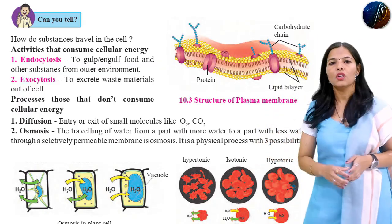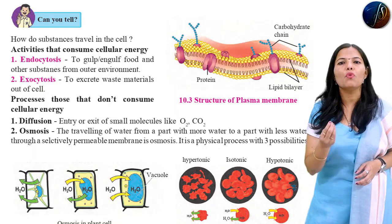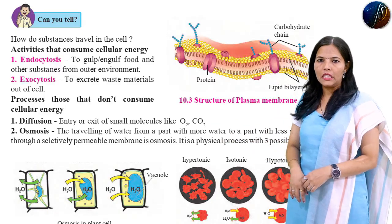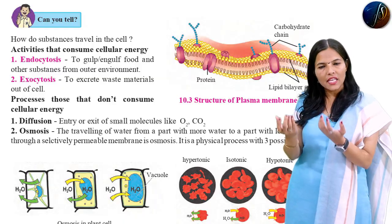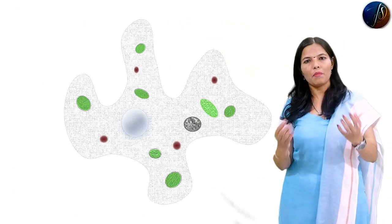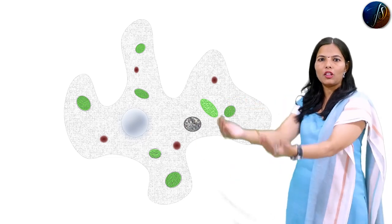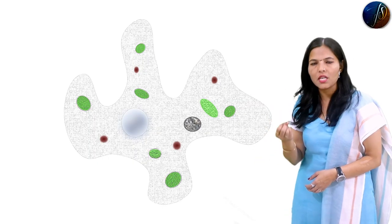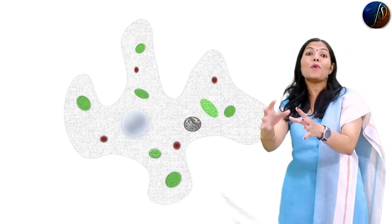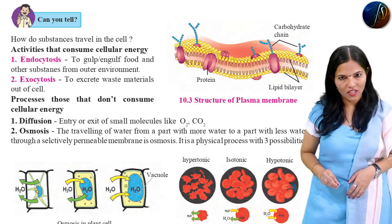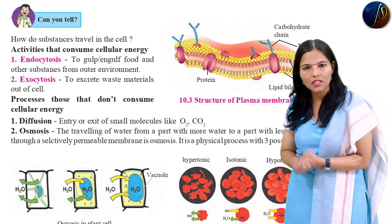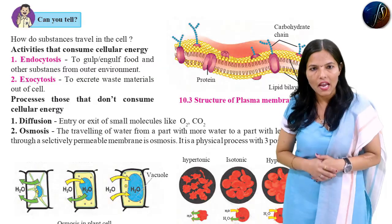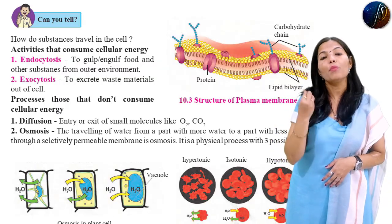So what is endocytosis? To engulf or to gulf food and other substances from the outer environment — this is endocytosis. Amoeba is an example of endocytosis. Endocytosis: to engulf the food and other substances from the outer environment is called endocytosis. This process in the cell is an energy-consuming process.